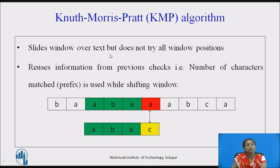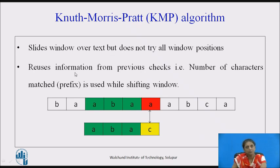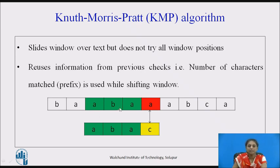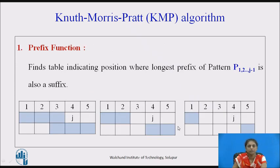The next algorithm is Knuth-Morris-Pratt — the KMP algorithm. In this algorithm, the window slides over the text but does not try all window positions. Instead, it reuses information from previous checks — that is, the number of characters already matched. For example, if ABA is matched and then there is a mismatch, those three matched characters forming a prefix can be used to shift the window.